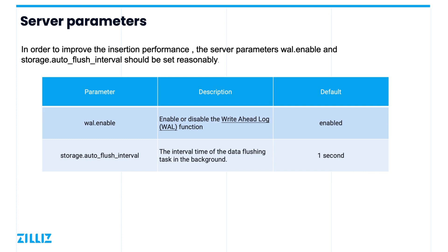To insert data reliably, we generally recommend enabling this parameter. However, if you want to improve Milvus's data writing performance and ensure there are no abnormal situations when inserting data in a production environment — such as a server power failure — you can choose to disable the WAL functionality by setting wal.enable to false. The parameter auto-flush interval under the storage category in the config file also affects insertion performance. This parameter refers to the interval of when the background data flush occurs and has a default value of one second. Since data in Milvus is stored in slices, increasing this value can reduce the number of segment merges, reducing disk I/O and increasing the throughput rate of insert operations.